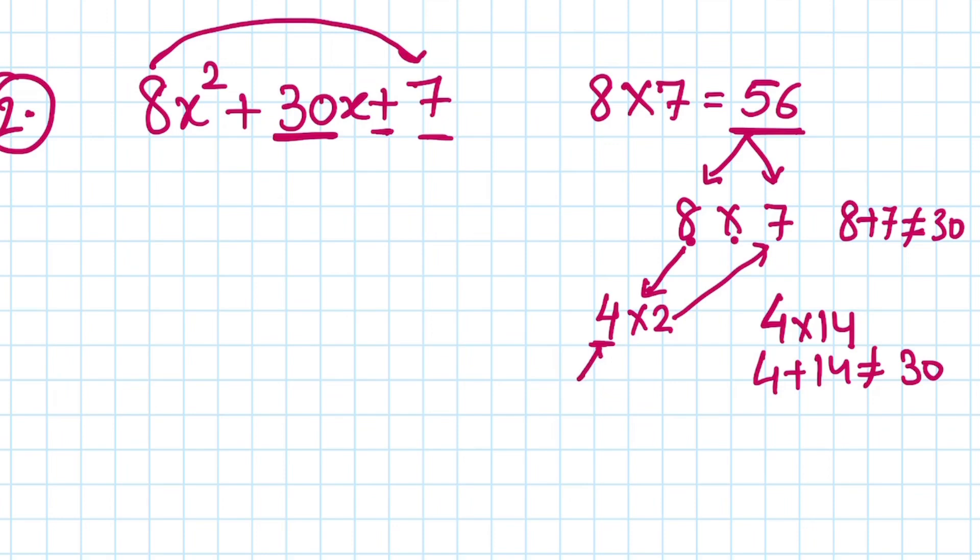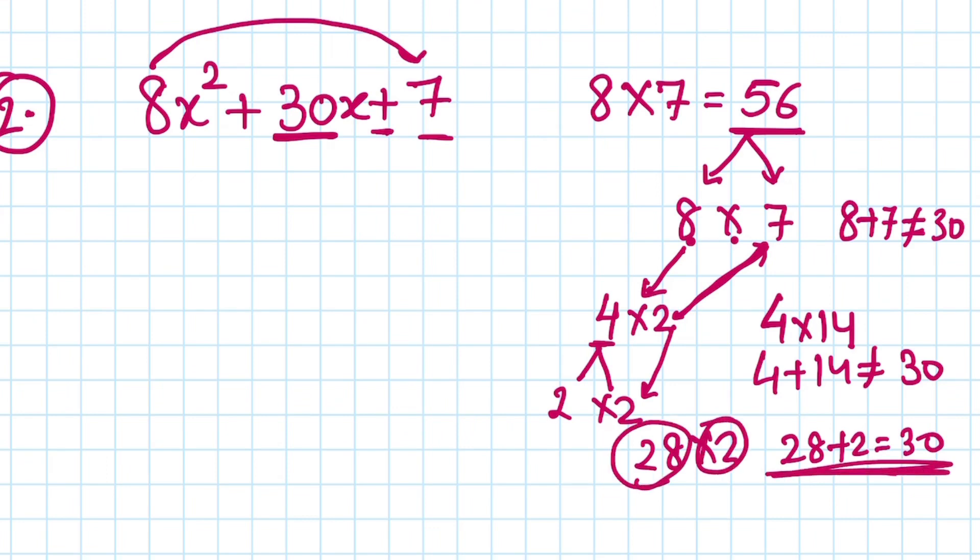But 4 can be further factorized as 2 times 2. So we can do 7 times 2 is 14, times 2 is 28 times 2, and 28 plus 2 is 30. So our two factors are 28 and 2.